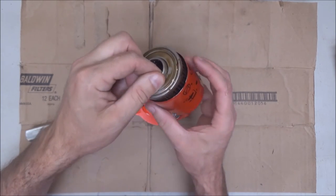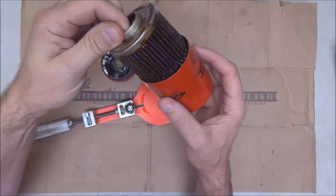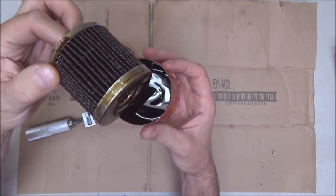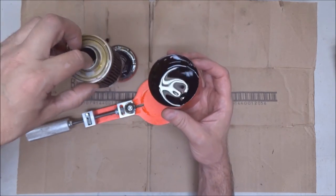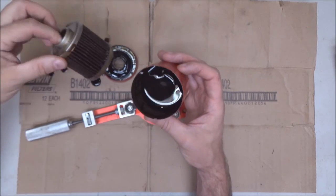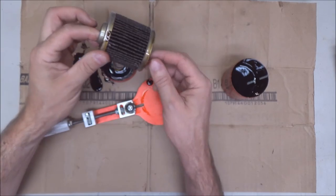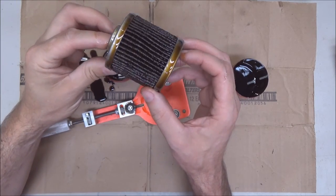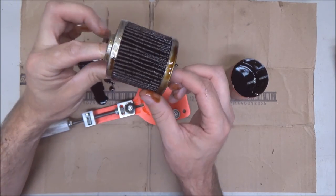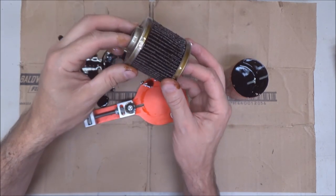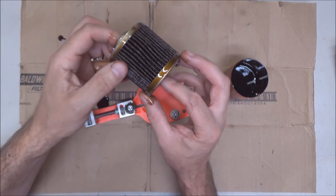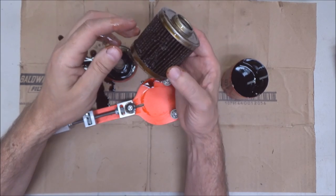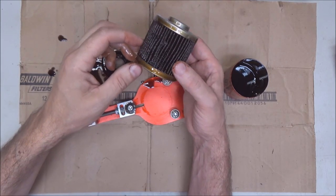I guess we'll pull the filter out and take a quick peek since we did open it. I'll try and not make a huge mess here. Filter looks good. It's 5,000 miles, that's the interval I go in my car. Filter looks good.